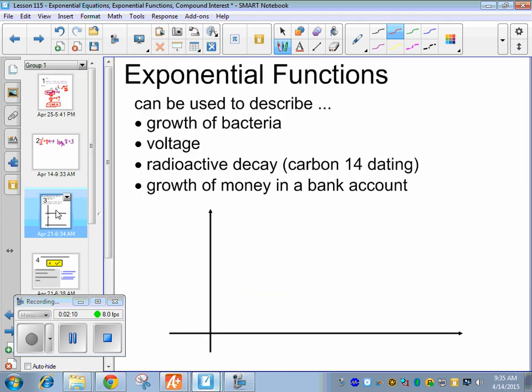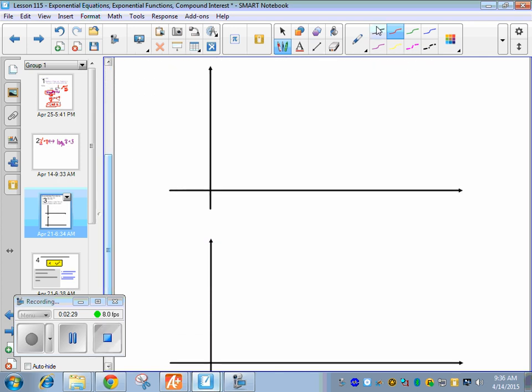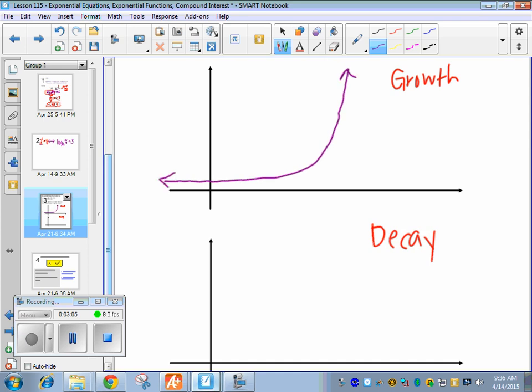So exponential functions in general can be used to describe growth of bacteria, voltage, radioactive decay, hopefully the growth of your money in a bank account, and maybe like the population of rabbits. That would be exponential growth. So there's two graphs. We're going to show what a growth graph looks like and what a decay graph looks like. So when you're doing exponential growth, it starts out kind of flat, and then depending on how quickly it grows, it starts rising quickly.